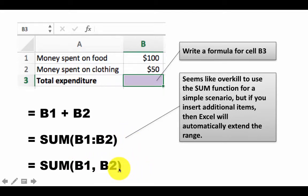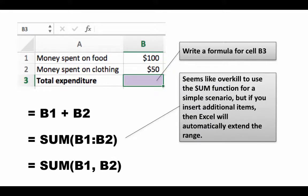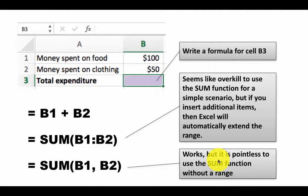SUM(B1,B2) doesn't really get us anywhere — you might as well just write B1+B2, as this is not giving us any great advantage. There's another option some people use: SUM(B1+B2). That is really pointless because when you say B1+B2, you've already added them up. So what's the point of SUM? You're providing just a single number. It is actually very pointless to use the SUM function without a range.